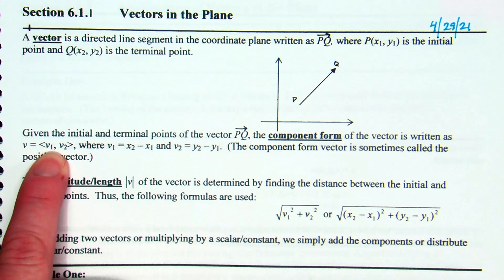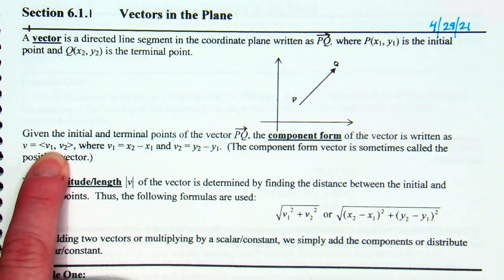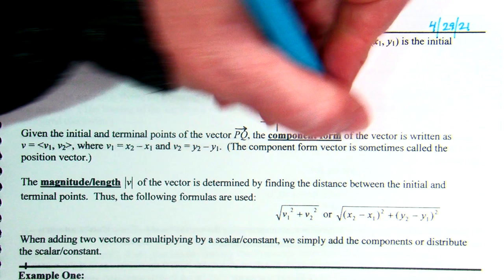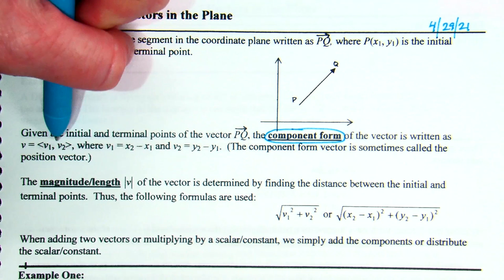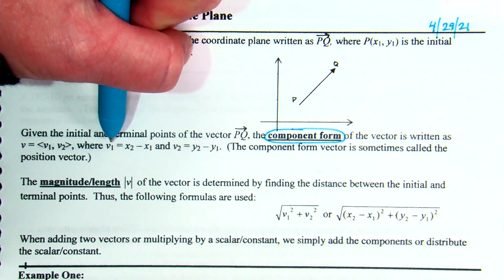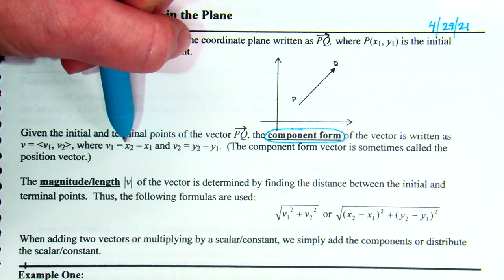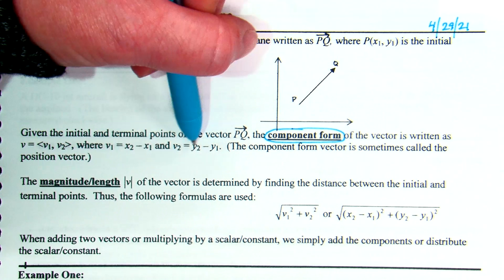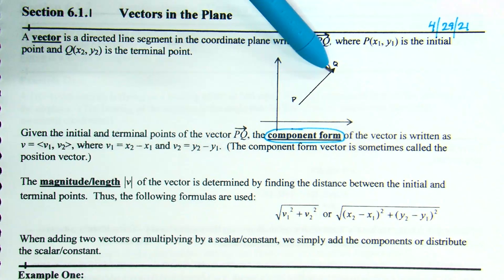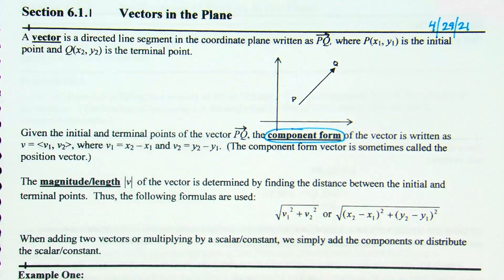The component form looks like an ordered pair, but it's not technically an ordered pair. Given the initial and terminal points of the vector PQ, the component form is written using less-than/greater-than signs — not parentheses. To find the first component V1, you subtract the X coordinates. To find V2, you subtract the Y coordinates. It's always going to be terminal minus initial.